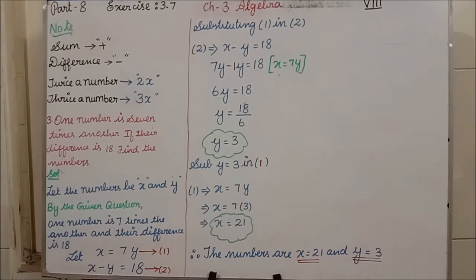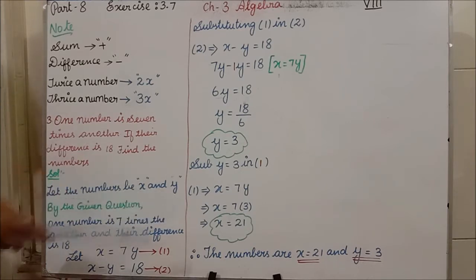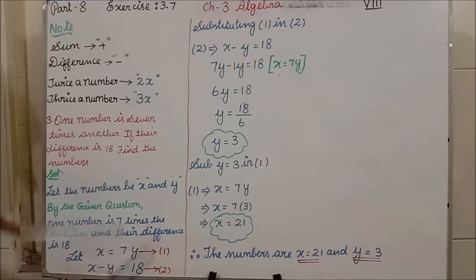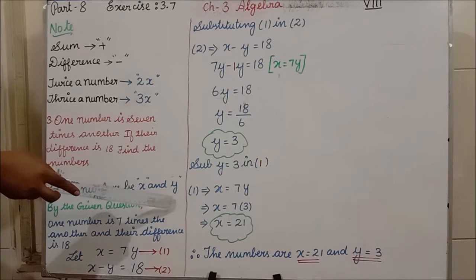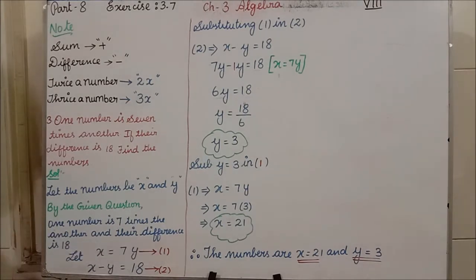By the given question, one number is 7 times the other — so X is equal to 7Y. We mark that as equation 1. Next, their difference is 18, meaning when we subtract X minus Y we get 18. So X minus Y equals 18, which we mark as equation 2.